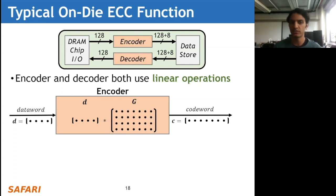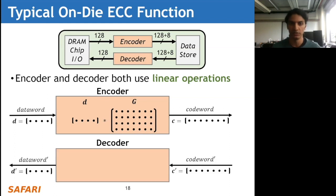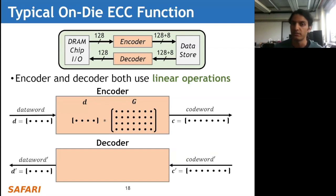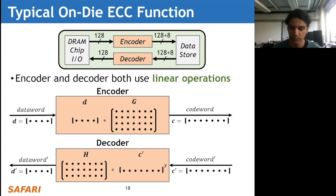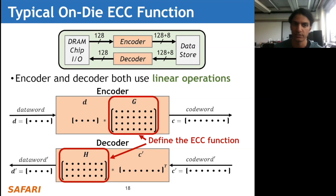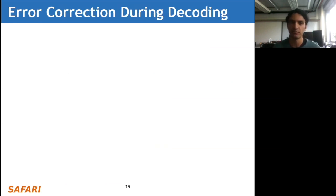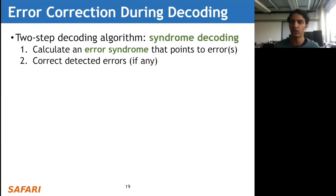Similarly, the decoder is also a linear transformation. It inputs the code word prime - potentially containing bit flips - and outputs the data word prime, which is the data word after correction. The decoder uses a matrix multiplication with what's called the parity check matrix H, acting upon the code word prime. Together, the G and H matrices define the ECC function and are exactly what we want to figure out in our work.